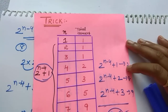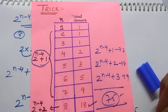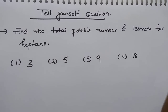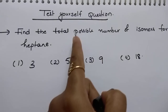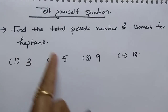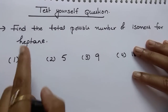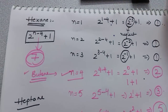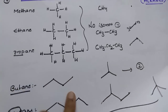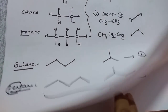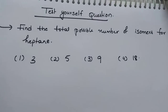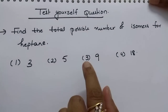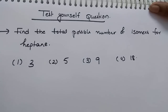I hope you like this video. Thanks for watching. I forgot to give you the test-yourself question: find the total possible number of isomers for heptane. You have to draw the total number of isomers using the method I taught you, then use the trick. Practice it and comment your answer. I am going to give you the solution in the description box.